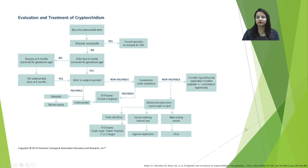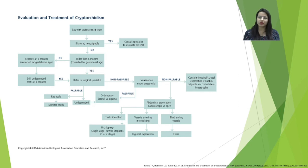If a nubbin is found during inguinal exploration, counsel the parents that only a small tissue nubbin is present. It should be brought out of the inguinal canal and fixed near the scrotum, with parents informed about the state of the testis.